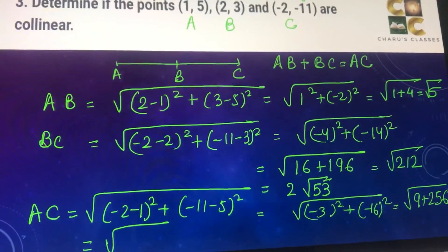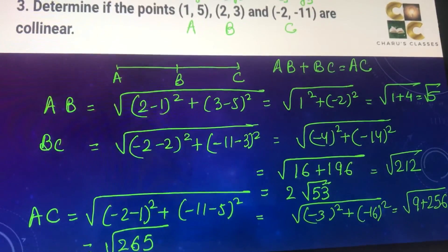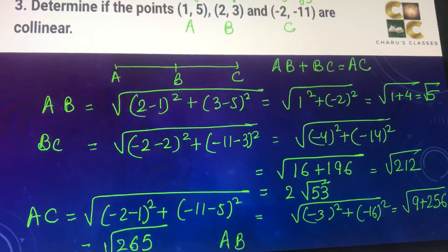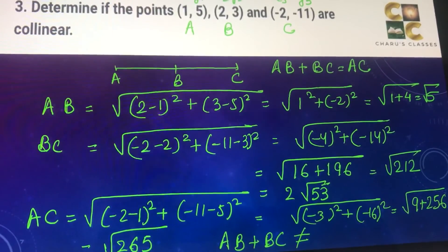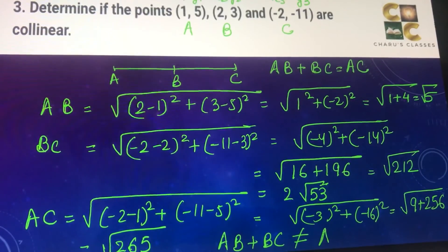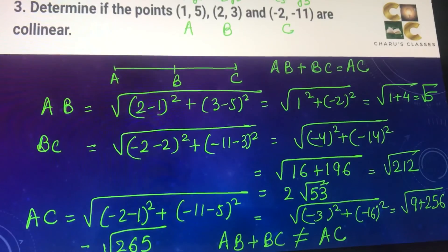So as we can see that AB plus BC, that is root 5 plus 2 root 53, is not coming equal to AC. Therefore, these three points are non-collinear.